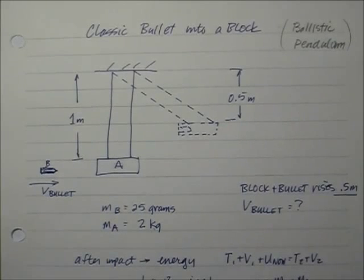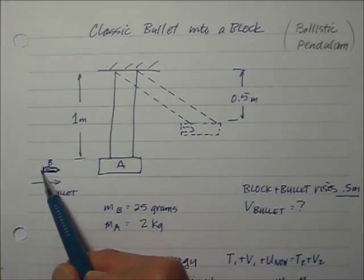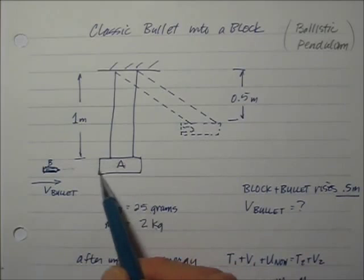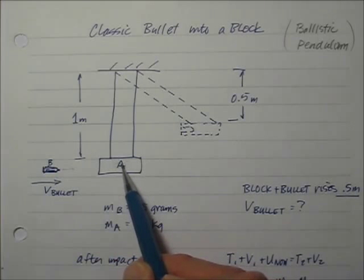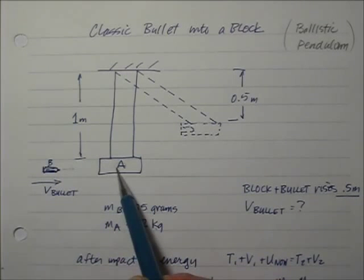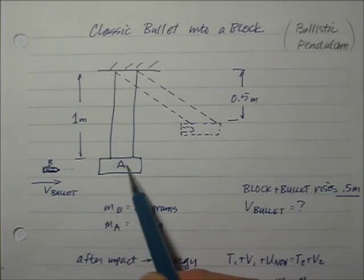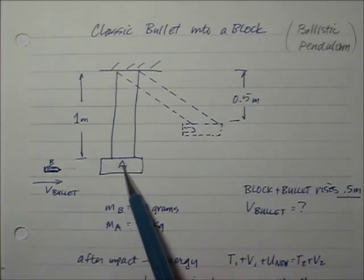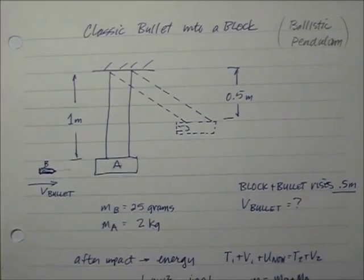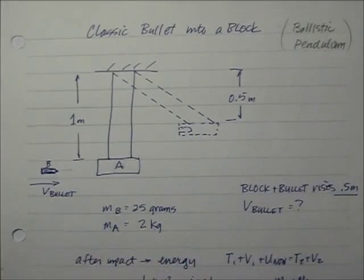Another classic problem is the ballistic pendulum. A bullet is fired in one direction and buries itself in a block of wood. Conservation of momentum applies for the bullet and block together — even though energy is lost during the embedding process — and after the bullet is buried, the block swings upward. We will use a combination of energy and momentum techniques to find out how fast the bullet was going.